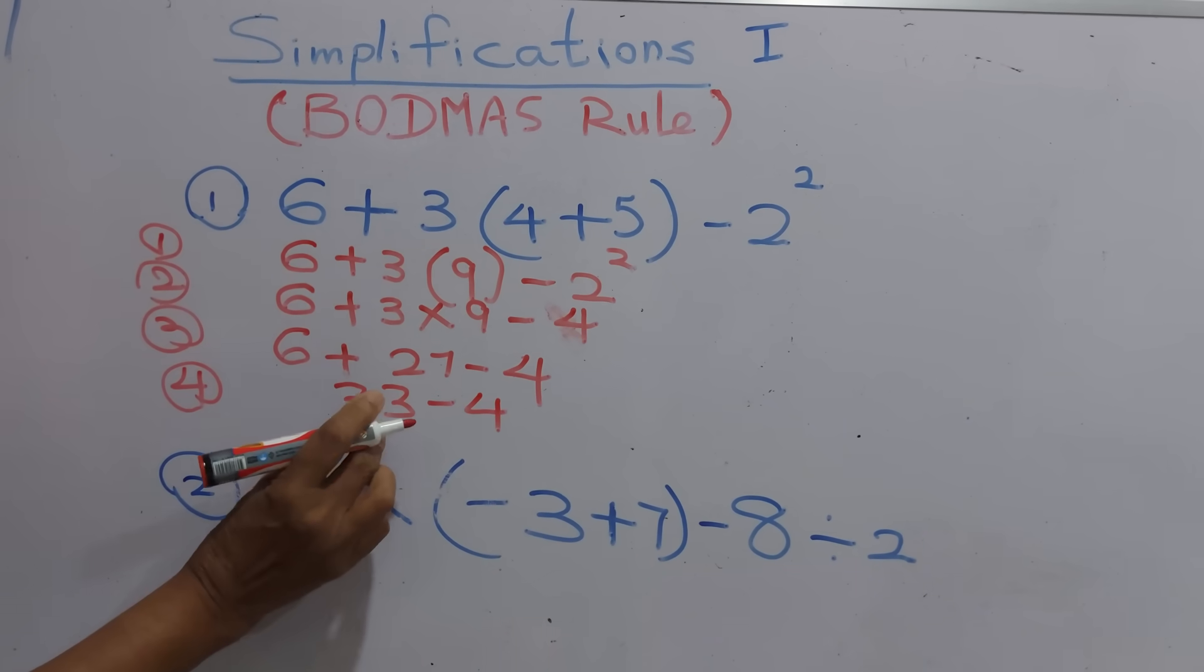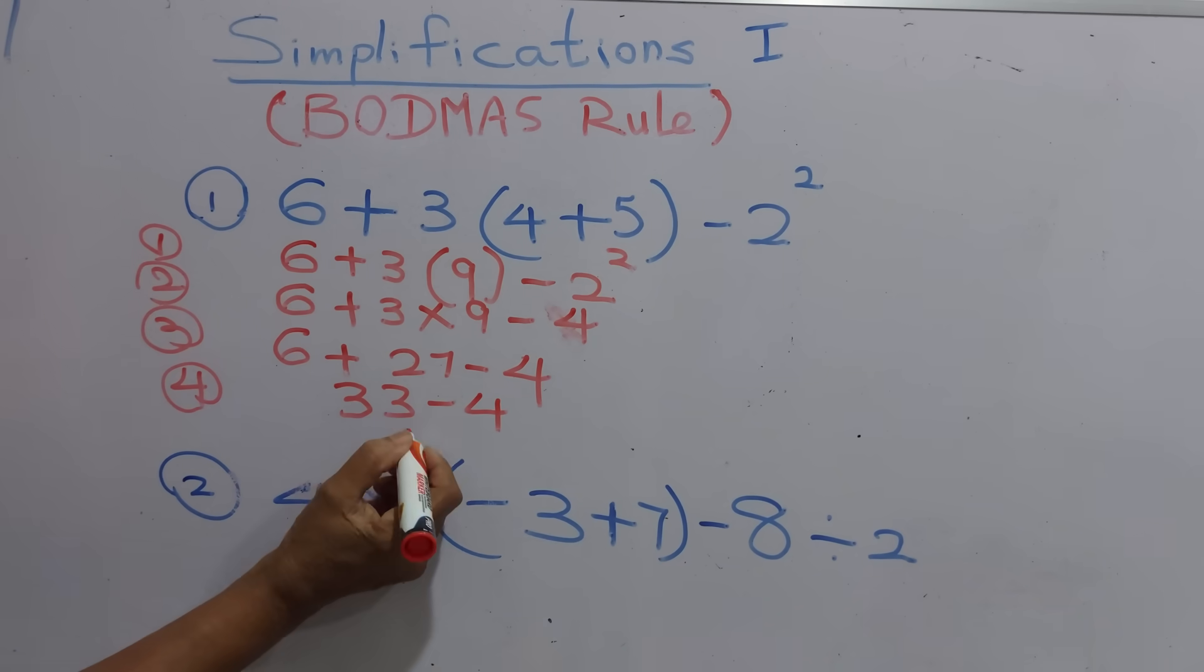Now we are going to get the answer easily. 33 take away 4, the answer is 29. That is the answer.